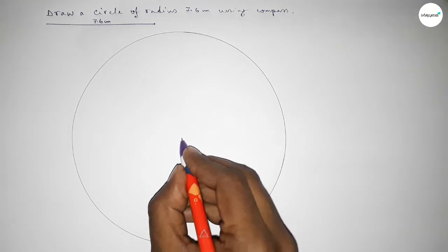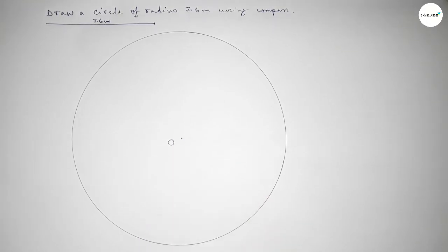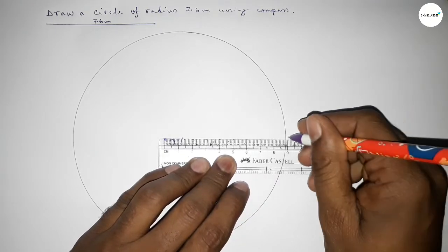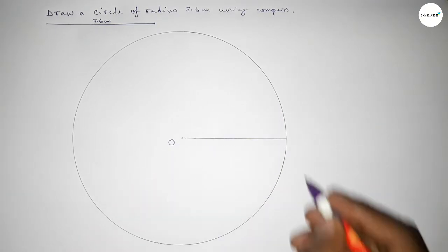So taking here center O. Now joining this line and this represents the radius of this circle.